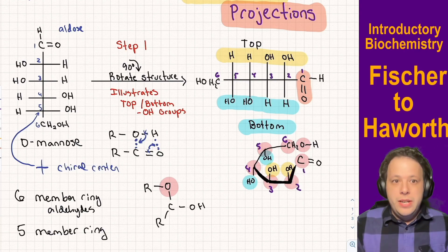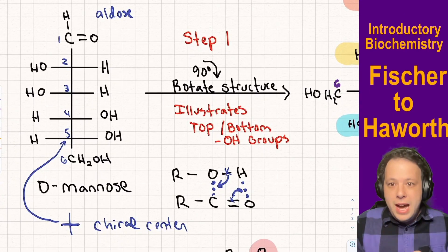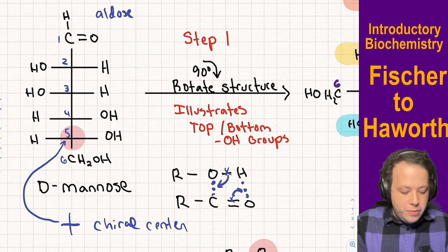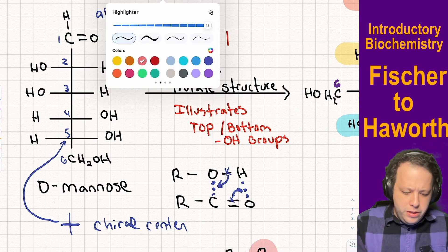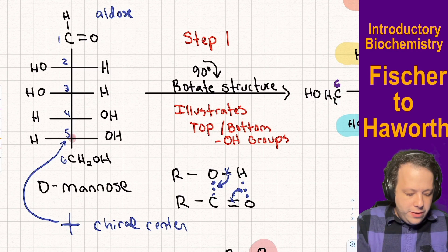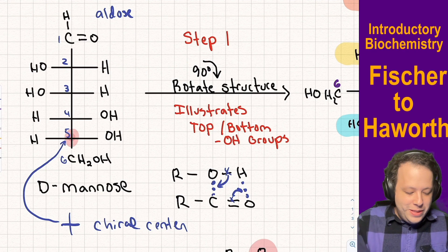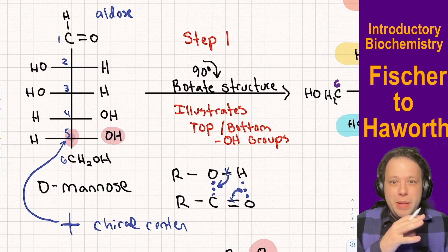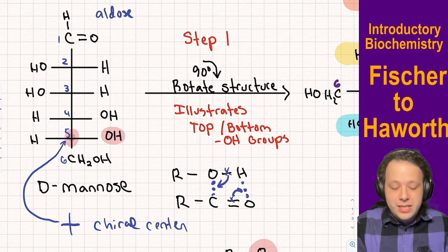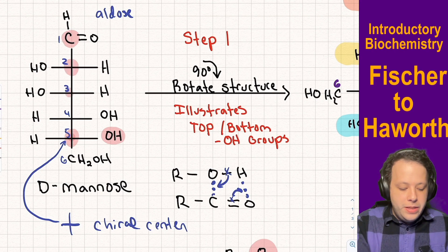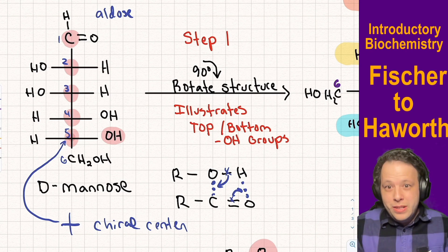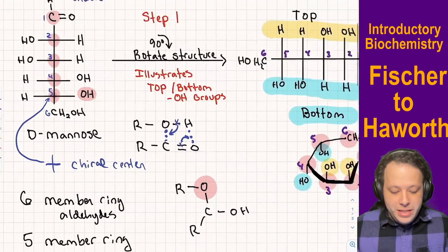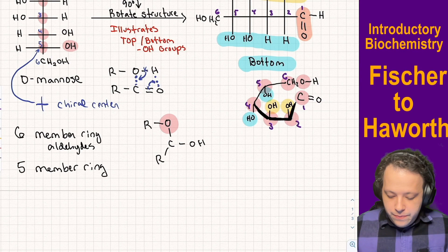Here's a quick way to count ring members. Go back to your original structure and go to the last chiral carbon — the alcohol on that carbon is going to be the one participating in the reaction. Starting at the C double-bond O, count: one, two, three, four, five, six. So this is going to be a six-member ring.